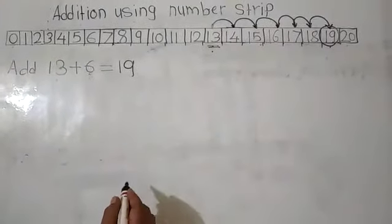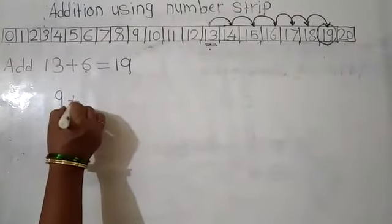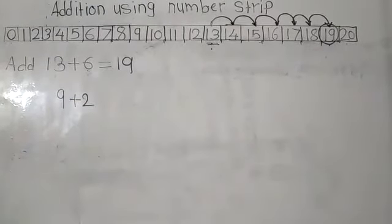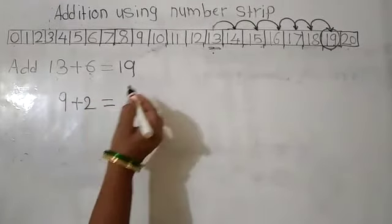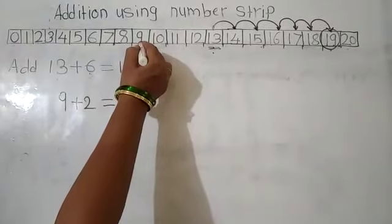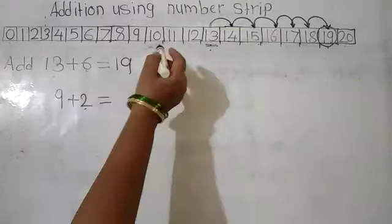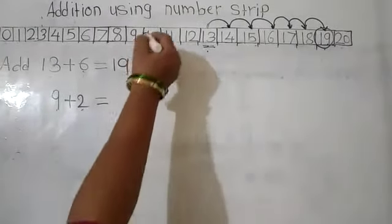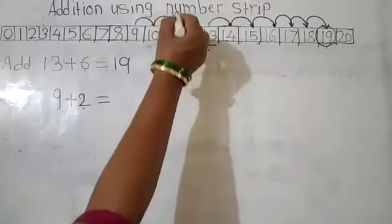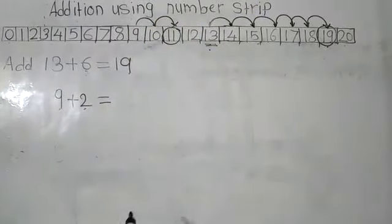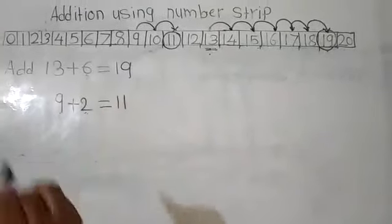Let's see another example: 9 plus 2. Here is number 9 and we have to go forward 2 numbers from number 9. Let's start: 1 and 2. And we reached number 11. So 9 plus 2 is equal to 11.